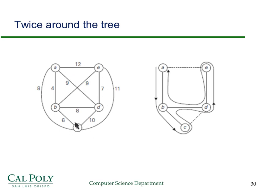Here's a worked example on a weighted graph. We want the twice-around-the-tree approximation for TSP. First we construct the minimum spanning tree, which has edges A-B, B-C, B-D, and D-E. Then we do depth-first search starting at A: go to B, go to C. C has no unvisited neighbors, so come back to B, then to D, then up to E, back to D, and back to A. We've gone twice around the minimum spanning tree.